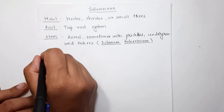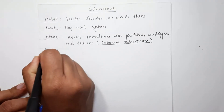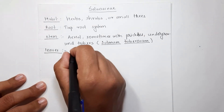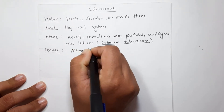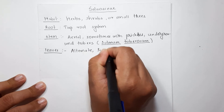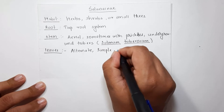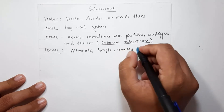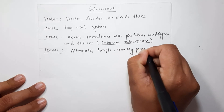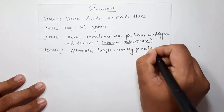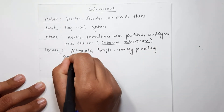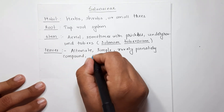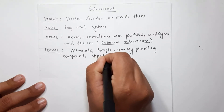Next is the leaf. The phyllotaxy of the leaf in the Solanaceae family is alternate. The leaves are simple and rarely show pinnately compound arrangement. These pinnately compound leaves occur in the potato, that is Solanum tuberosum. Stipules in the Solanaceae family are generally absent.